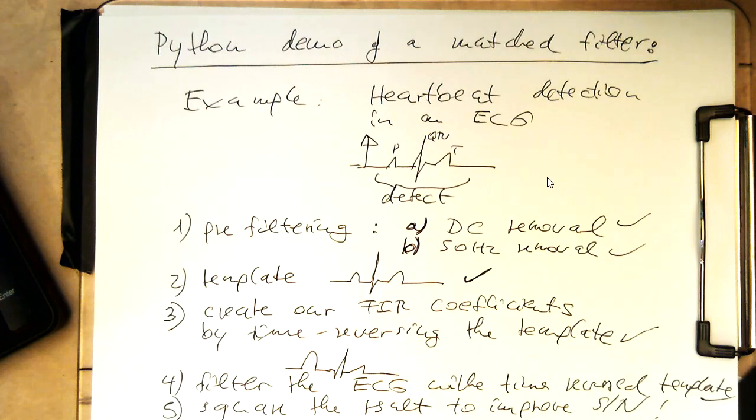With that we have a nice pronounced output here. Then this can be easily processed now just by thresholding and measuring the time between the heartbeat to get, for example, the heart rate out there.